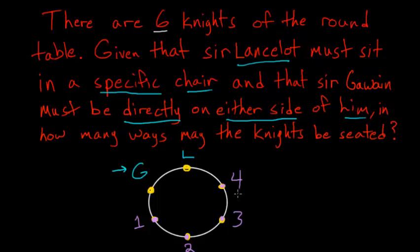To figure out the total number of these, we just take the product. Four times three times two times one, which is also known as four factorial. So the knights beside Gawain and Lancelot have these four factorial ways of sitting.